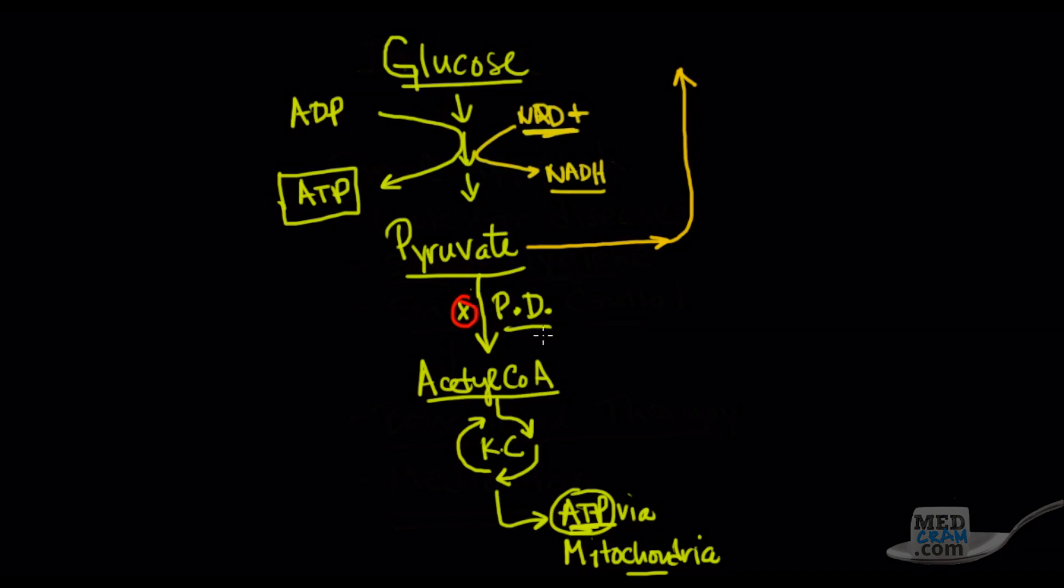In other words, if pyruvate dehydrogenase is shutting down, pyruvate has to be metabolized in a way that will regenerate NAD+, so that you can continue with glycolysis and make ATP in this way. Because if this is shut down, you can't make it this way.